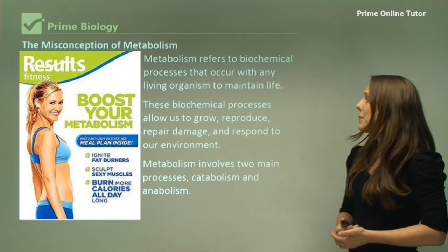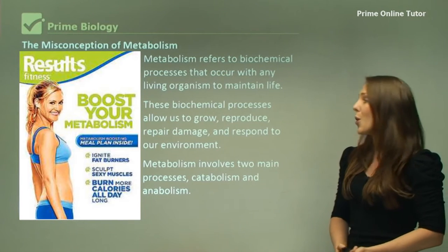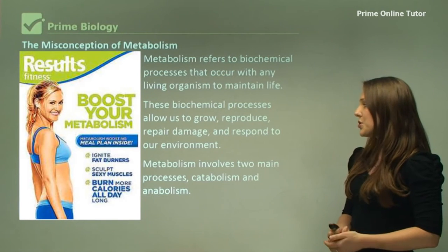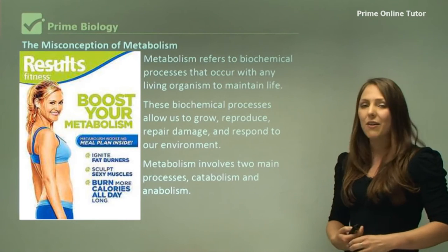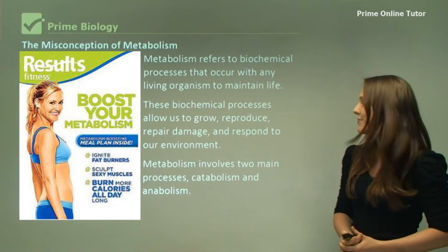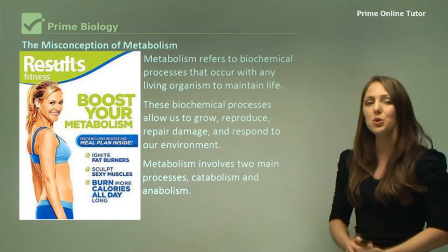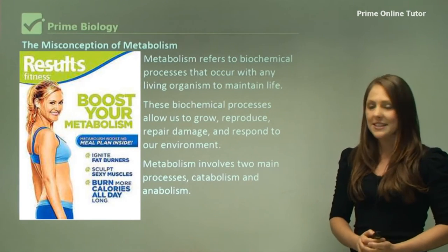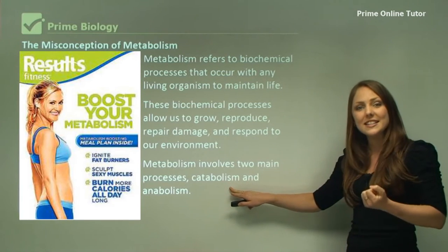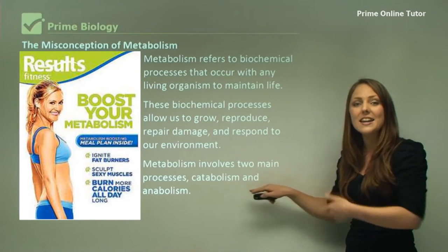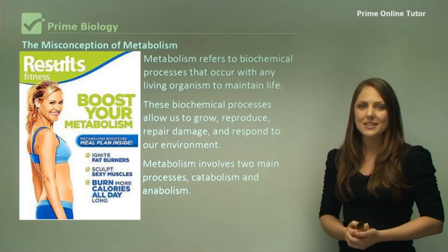The biochemical processes allow us to grow, reproduce, repair damage, and respond to our environment. Metabolism involves two main processes: catabolism, which is breaking down things, and anabolism, which is building up things in your body.